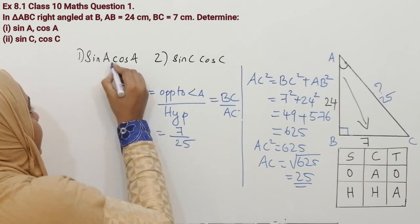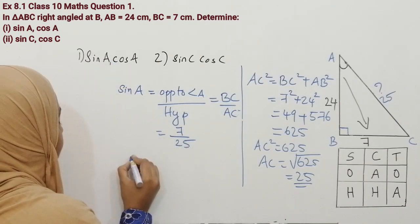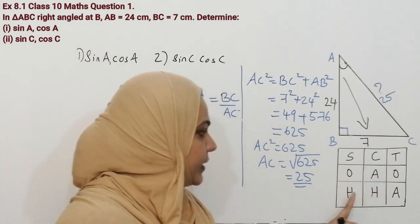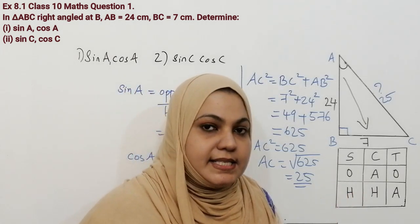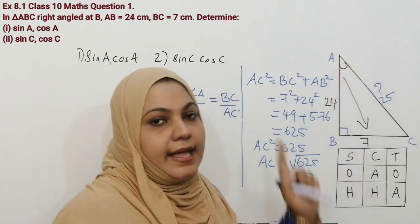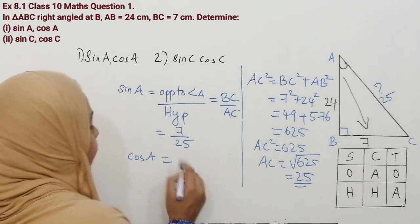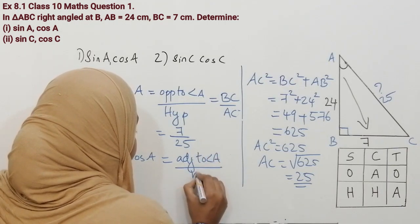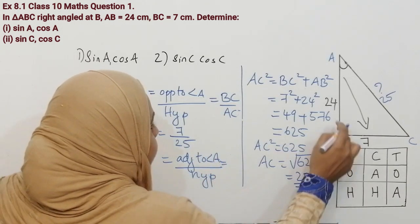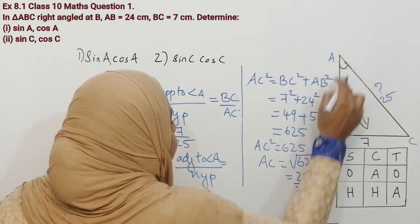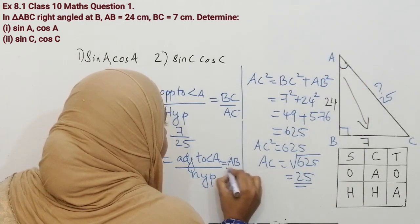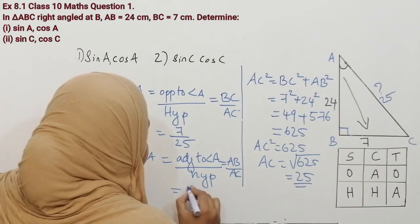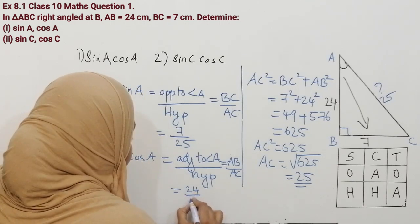We found the value for sin A. Next, we can find cos A. Cos means adjacent over hypotenuse. Adjacent means the side which contains the reference angle and the 90-degree angle. AB is adjacent to angle A, and hypotenuse is AC. AB is 24 and AC is 25.